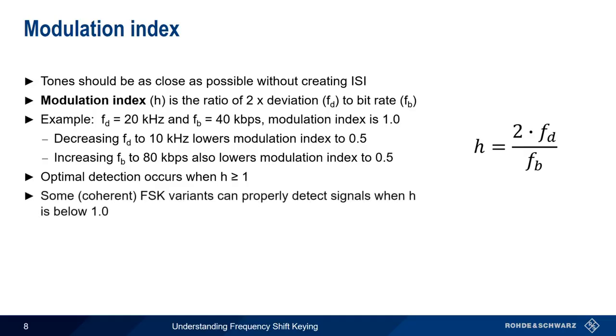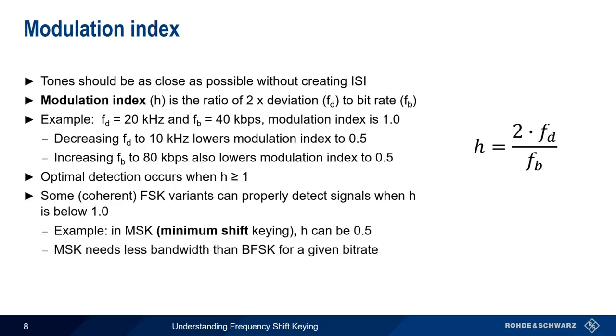One of the advantages of the coherent FSK schemes we mentioned earlier is that they can properly detect signals even when the modulation index is less than 1. For example, minimum shift keying can detect signals when H is as low as 0.5. This means that MSK needs less bandwidth than standard BFSK to reliably transmit signals at the same bitrate.